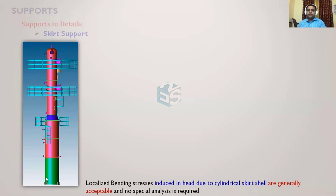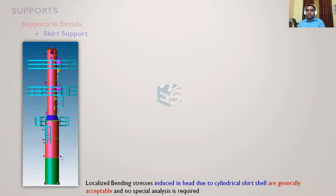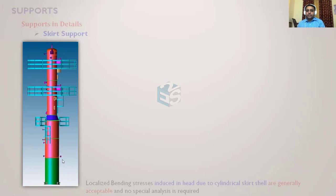At the junction, the OD of the shell and OD of the skirt should match. Ideally, the centerline of the shell and the centerline of the skirt should be the same, so that localized stresses developed are on the lower side. When the skirt is attached to the bottom dished end and the ID, OD, or centerline is matched, the skirt shell comes on the knuckle portion of the dished end, and since load is transferred vertically with matched centerlines, the localized stresses at this junction are generally on the safe side and do not need separate analysis.